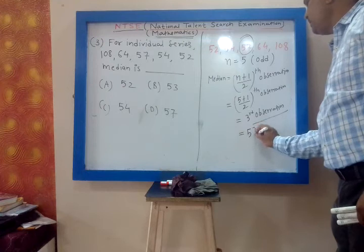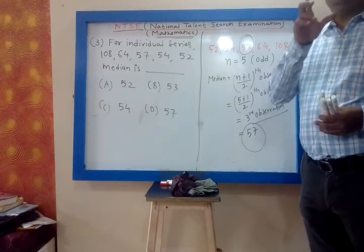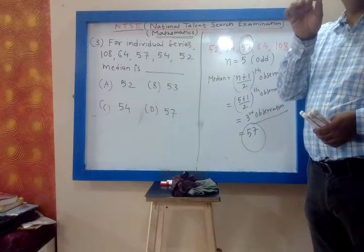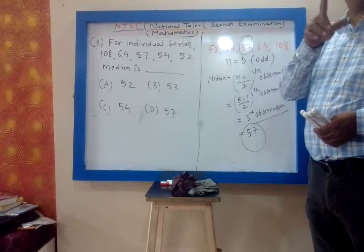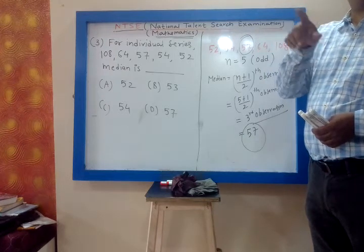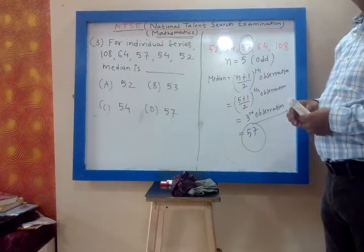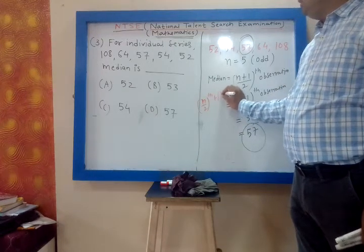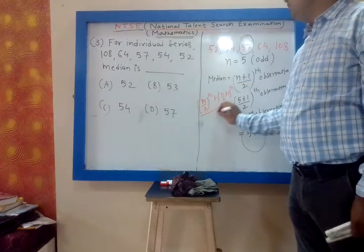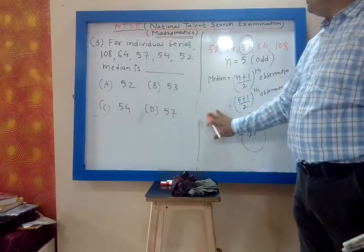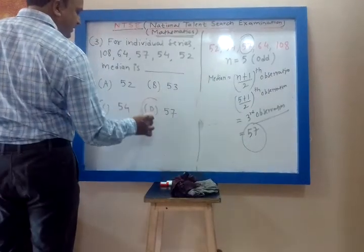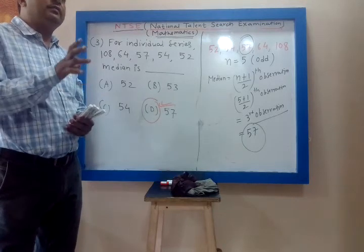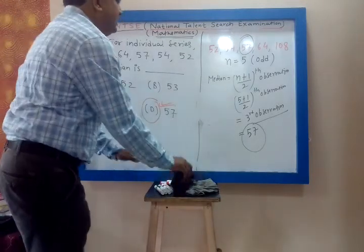Median is 57. For median it is compulsory to arrange data in ascending or descending order, then count n. For odd n, median is the (n+1)/2 th observation. For even n, the formula is the average of (n/2)th and (n/2 + 1)th observations. Here n is odd, so the correct option is 57.